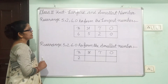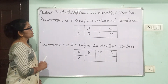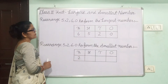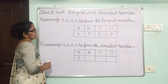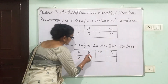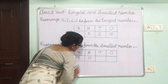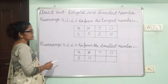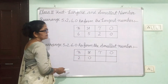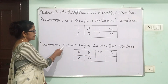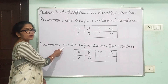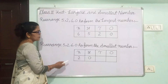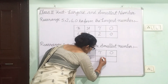Now, we will write the second smallest number in the 100s place. The second smallest number is 0, so 0 will go in the 100s place. Next, we will write the third smallest number in the 10s place. The third smallest number is 5, so 5 will go in the 10s place.